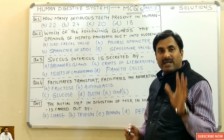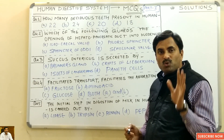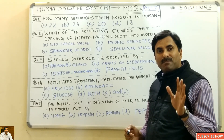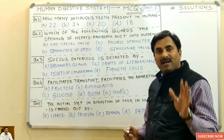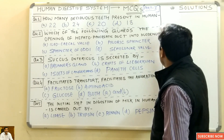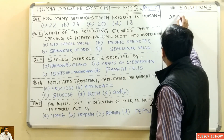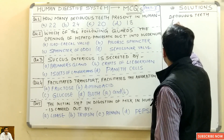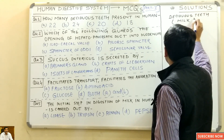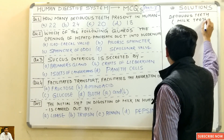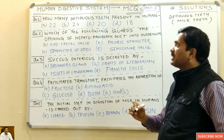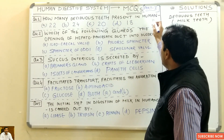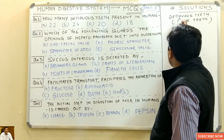In human beings there are two sets of teeth: one is known as milk teeth and another as permanent teeth. Deciduous teeth are basically called milk teeth, or they can also be called temporary teeth.